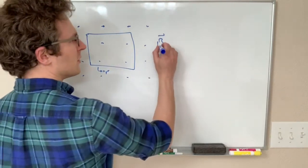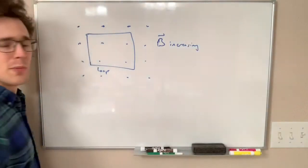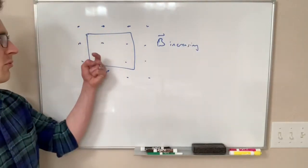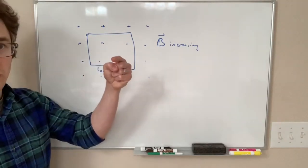And if our magnetic field, let's say we're increasing our magnetic field, right? So that means that the field is out of the board and getting more strongly out of the board.